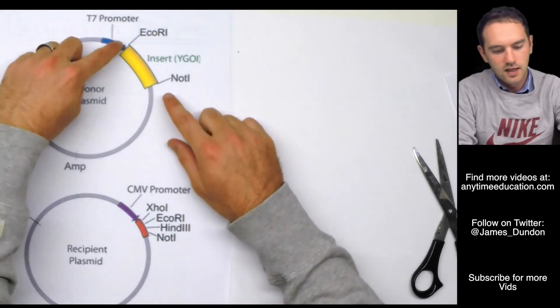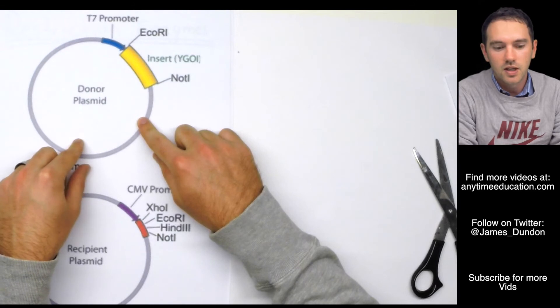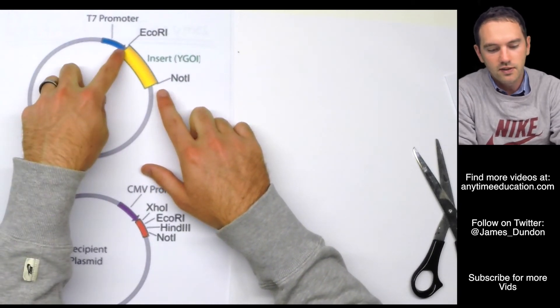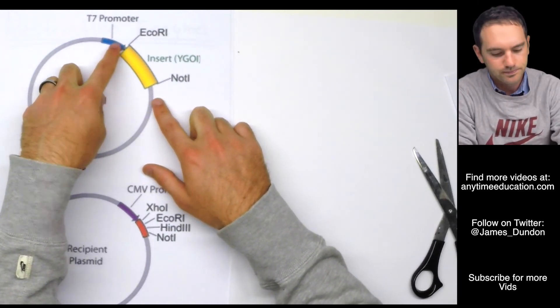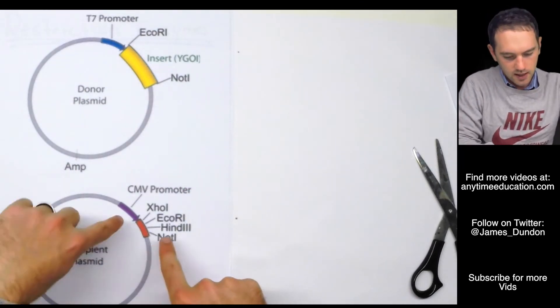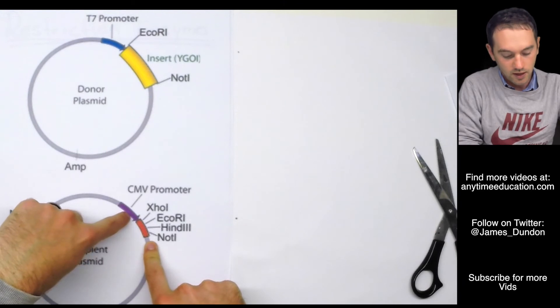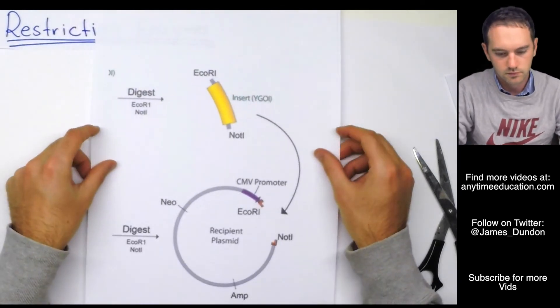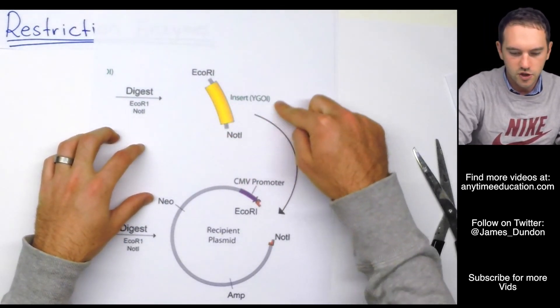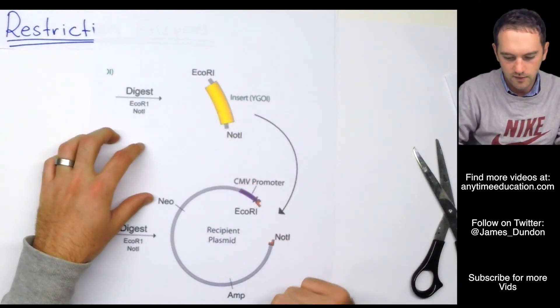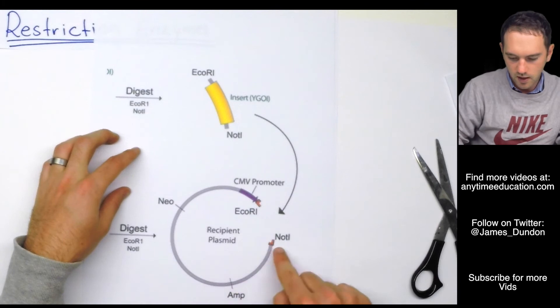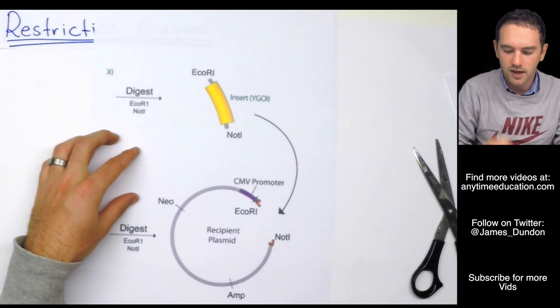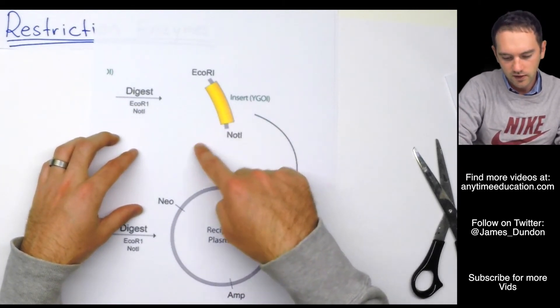So we can cut our donor plasmid. It doesn't have to be a plasmid. It could be human DNA. It could be fungal DNA. It could be anything, as long as it's got restriction enzyme sites outside of our gene of interest. We then now apply those same restriction enzymes to our recipient plasmid. And now what we've got is our gene of interest separated with sticky ends. And we've got our recipient plasmid also with these sticky ends. So you know what's going to happen? Of course, they're going to combine. Not always, but enough times that we can then use that.